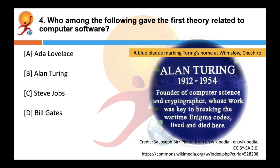Who among the following gave the first theory related to computer software? Correct answer is Alan Turing. The first theory about software prior to creation of computers was proposed by Alan Turing in his 1935 paper. This eventually led to the creation of the academic fields of computer science and software engineering. Turing was highly influential in the development of theoretical computer science providing a formalization of concepts of algorithm and computation with the Turing machine which can be considered a model of a general purpose today's computer.